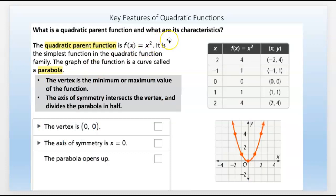What's a quadratic parent function? The parent function of a quadratic looks like this: f of x equals x squared. It's the simplest function in the quadratic function family. The graph of the function, the curve is called a parabola or a parabolic curve.